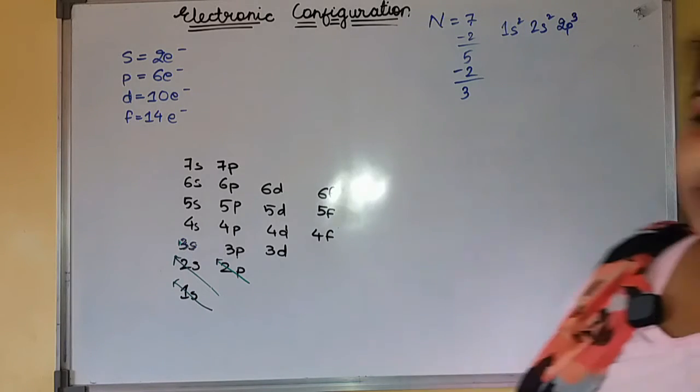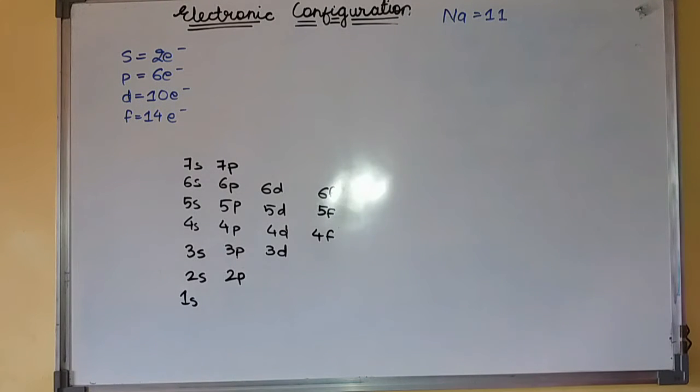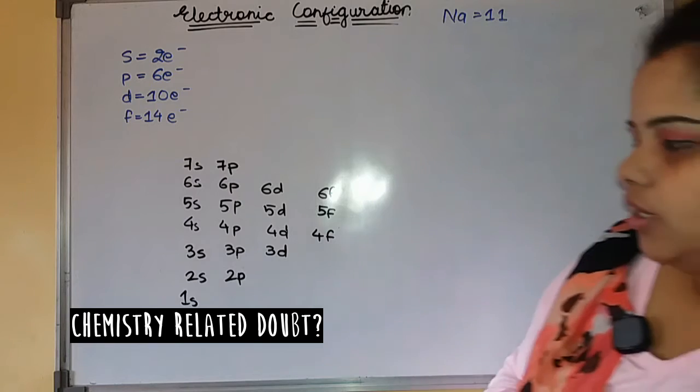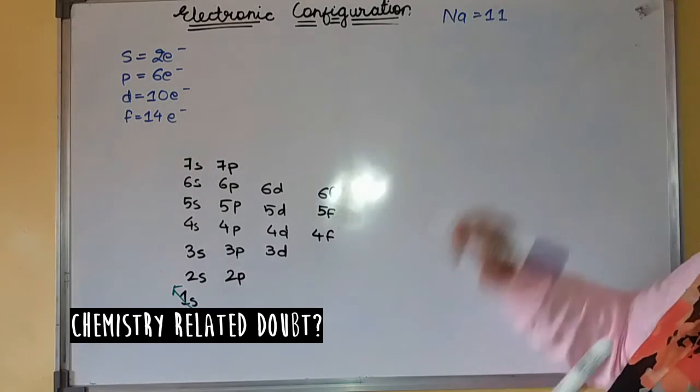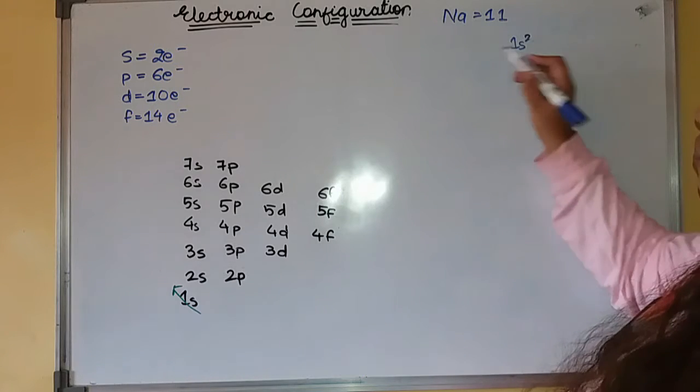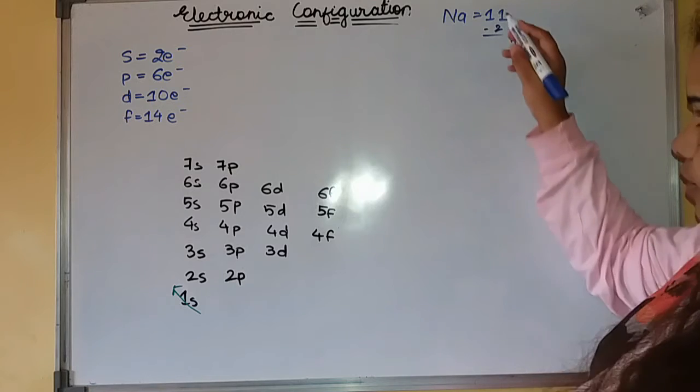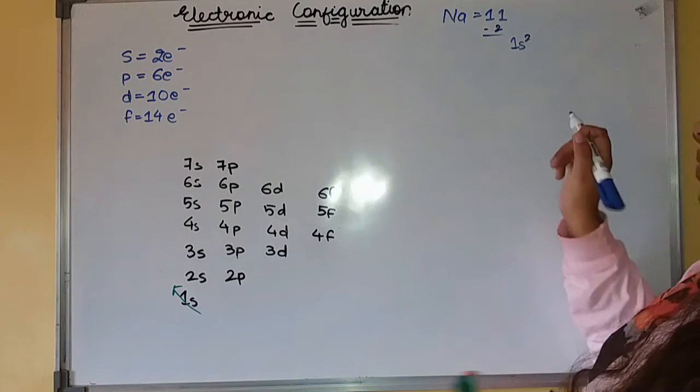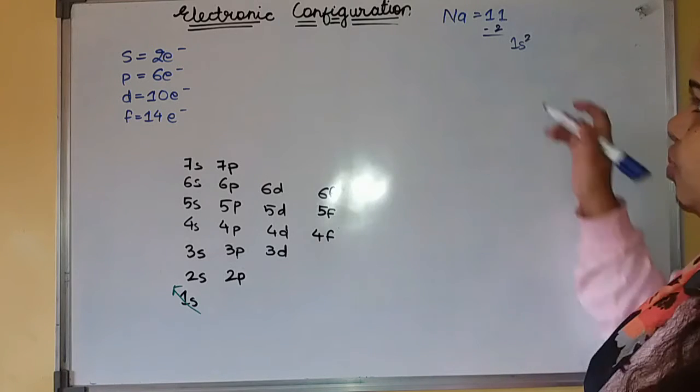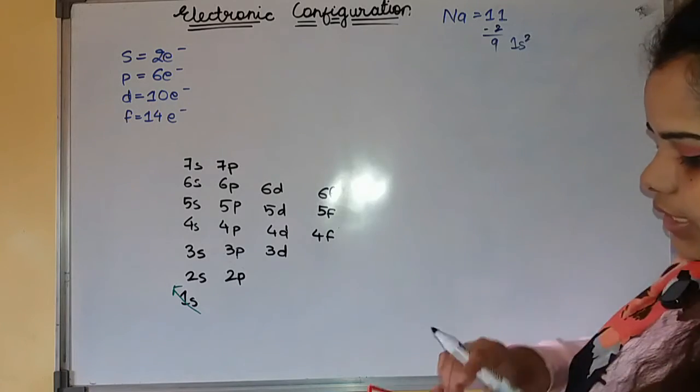Another example, sodium, which has atomic number 11. Then again, you have to start with 1s. You will write it down here, 1s². And subtract this 2. This is just for rough work. You don't have to do it actually like this. I am just doing this for your explanation purpose. This will become 1s².